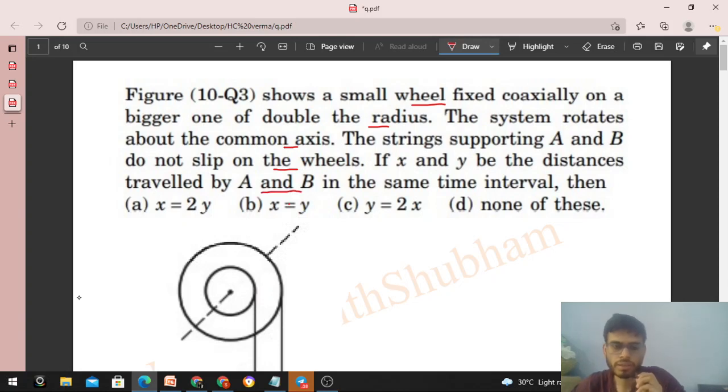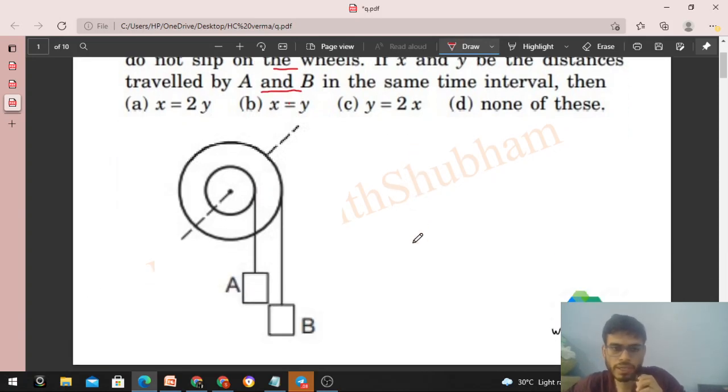So this is the diagram. The inner wheel has radius r, I'll assume. So the outer wheel will have radius twice of r, right?